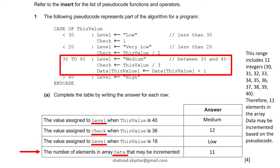And then the number of elements in array data that may be incremented is 11. It will start from 30 to 40. How many elements are there? There are 11 elements. This range includes 11 integers — 30, 31, 32, so on, 39 and 40.